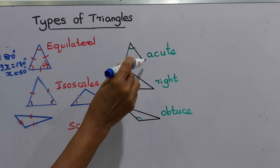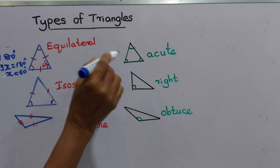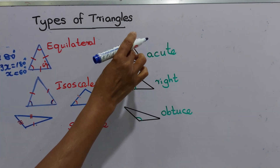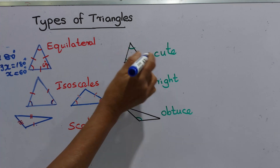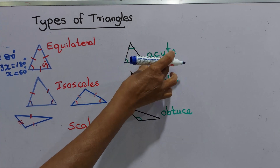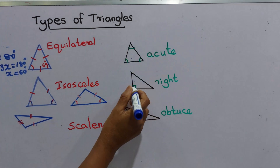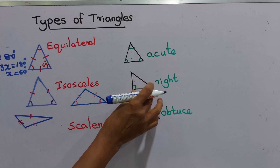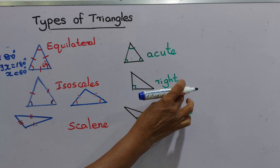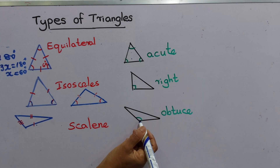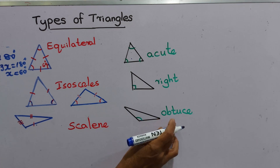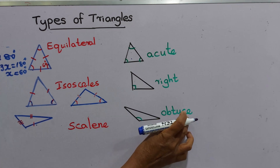Now we separate triangles according to their angles. In this triangle, all three angles are acute angles, so we name it an acute triangle. In this triangle, one right angle is present, so we name it a right triangle. In this triangle, you can see an obtuse angle, so we name it an obtuse triangle.